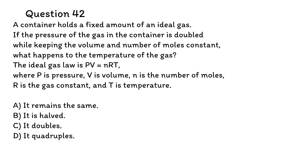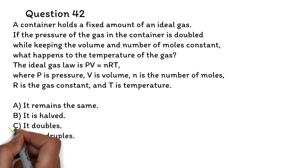Question 42. A container holds a fixed amount of an ideal gas. If the pressure of the gas in the container is doubled while keeping the volume and number of moles constant, what happens to the temperature of the gas? The ideal gas law is PV equals NRT, where P is pressure, V is volume, N is the number of moles, R is the gas constant, and T is temperature. A. It remains the same. B. It is halved. C. It doubles. The correct answer is C — it doubles.